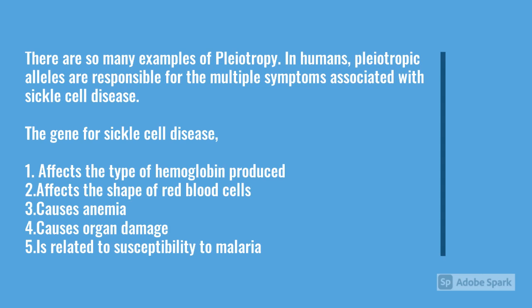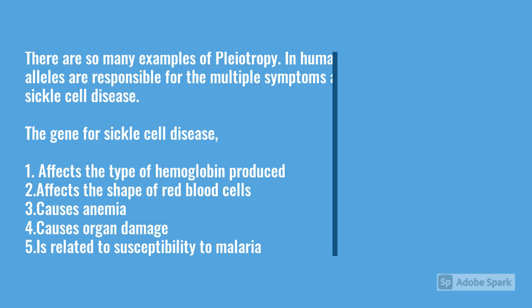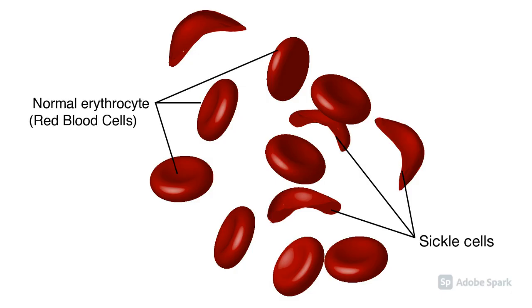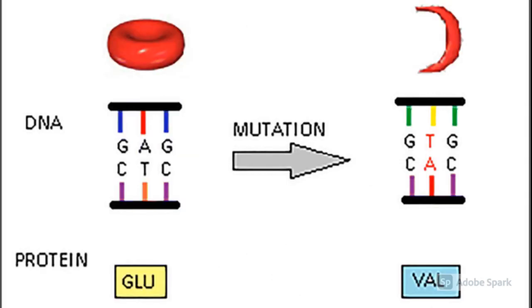The gene for sickle cell disease affects the type of hemoglobin produced, affects the shape of the red blood cells, causes anemia, causes organ damage, and is also related to susceptibility to malaria. This figure shows the shape of the red blood cells in sickle cell disease, and this figure shows the mutation which causes sickle cell disease.